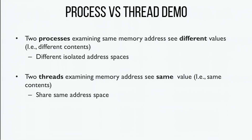What's the difference between a process and a thread? A process by default has just one thread. If you have two processes and they access the same address in their address spaces, they'll see different values. Whereas two threads in the same process share the same address space, so they'll actually see the same values — they can both access the same heap.